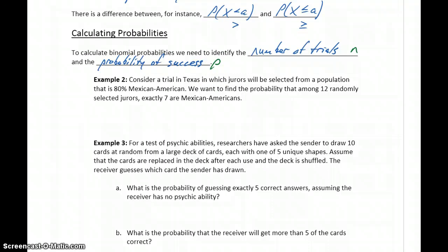So first we'll go through each of these examples, set up the probability statements, identify those two values, and then look at plugging that information into StatCrunch.